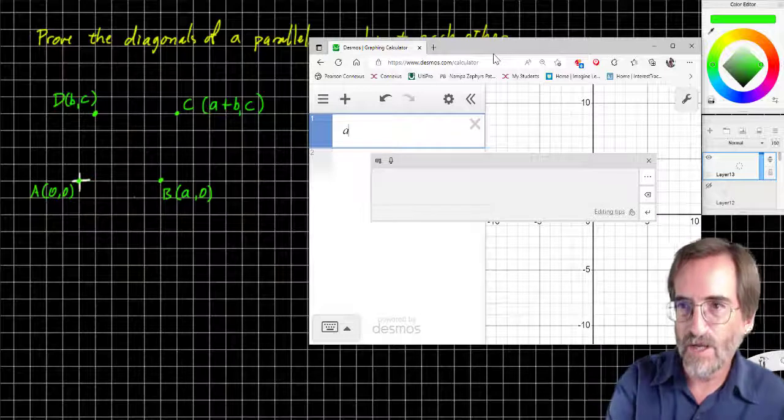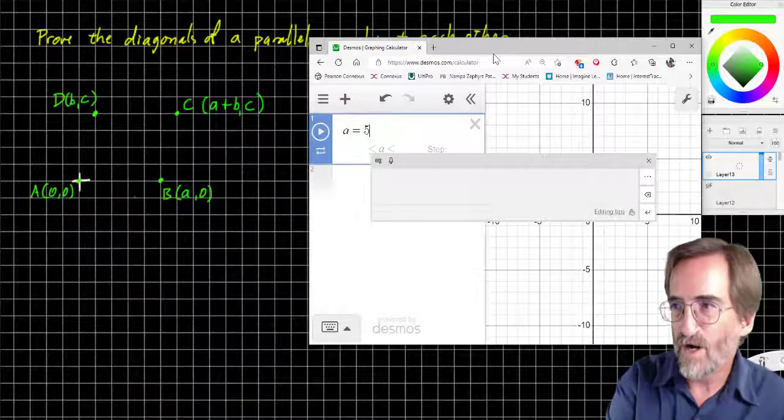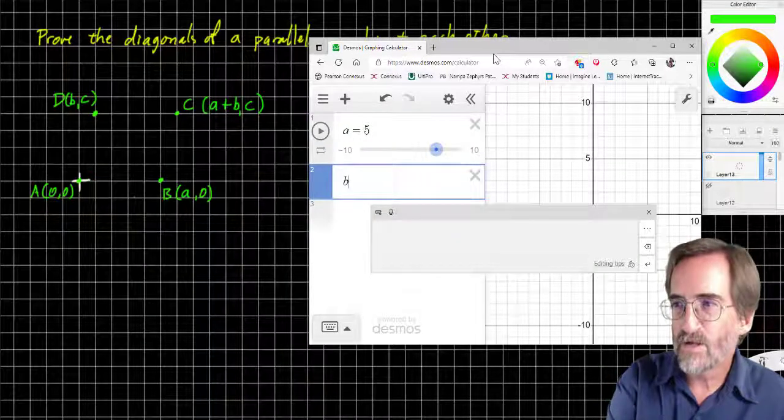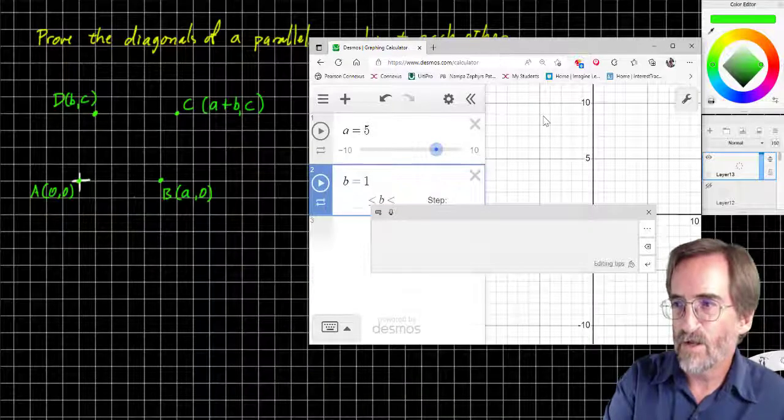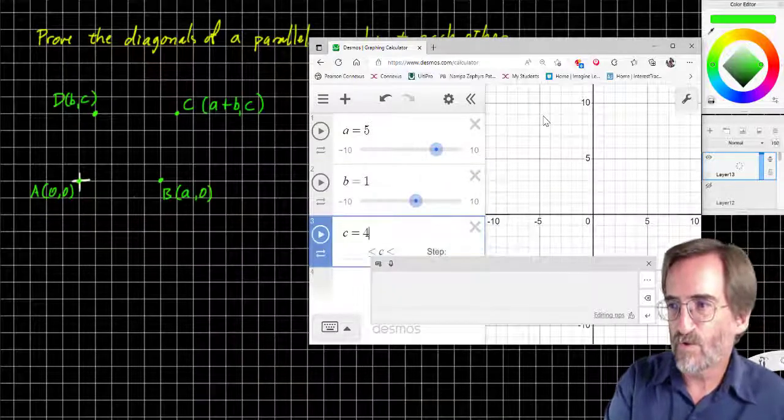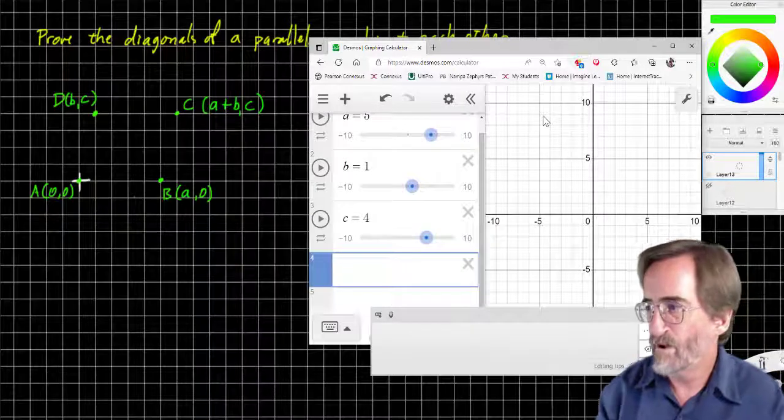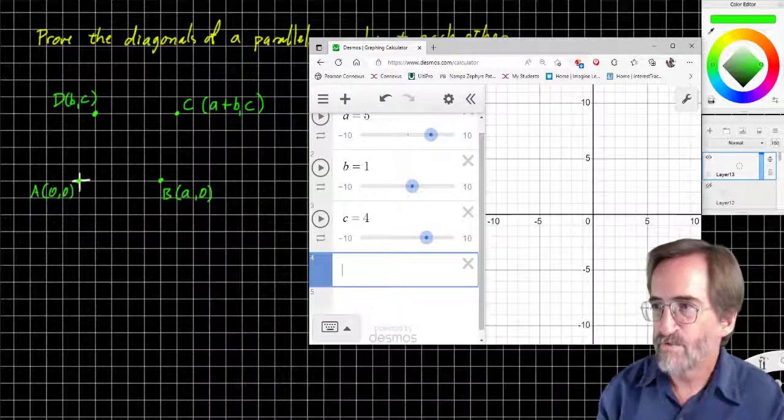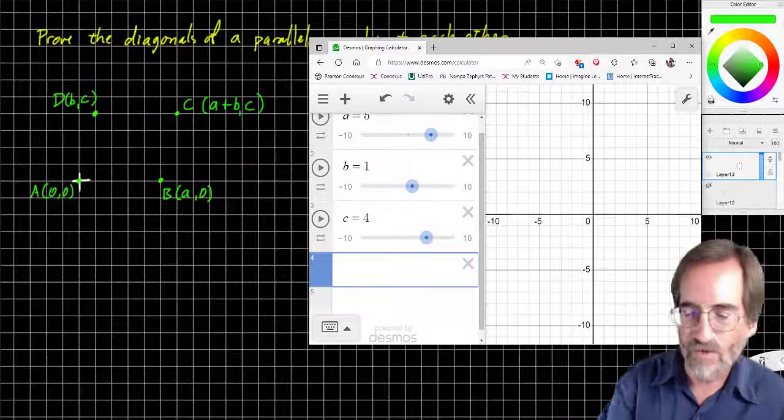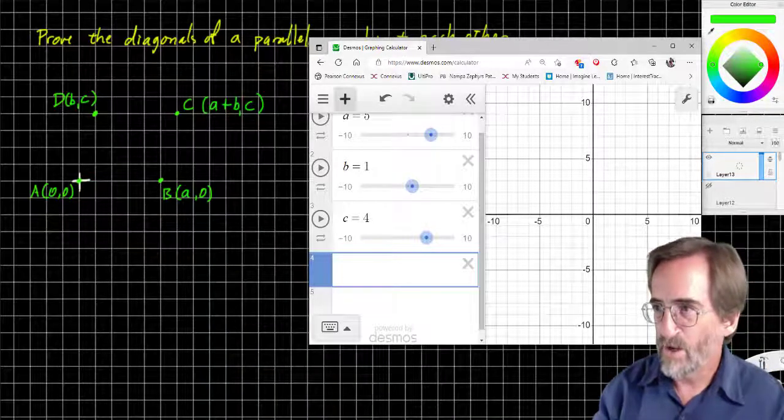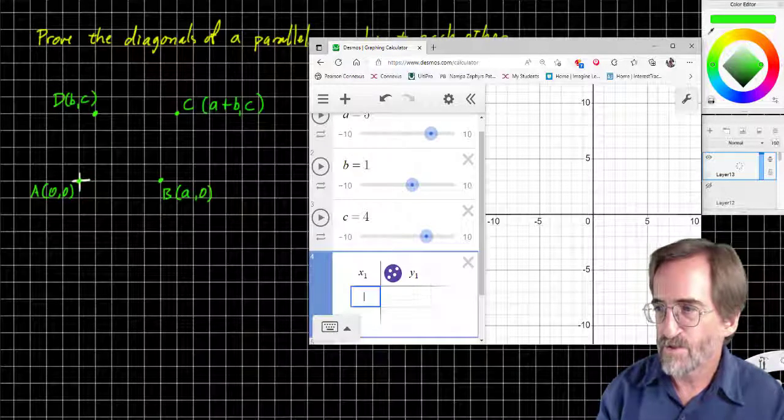I'm going to insert a table. First of all, before I insert a table, I'm gonna say a equals five. B equals one. C equals four. Those are our numbers that we had. So a equals five. B equals one. C equals four. So we're gonna sketch the specific case. And we're gonna insert a table.